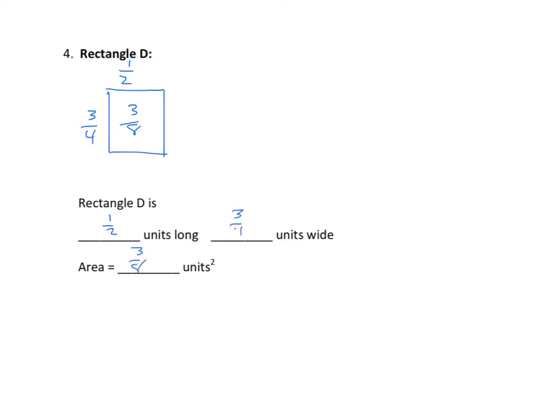Again, we could have used that old rectangular model. We did some shading. And then partition it this way. And then double shade. Again, we see that we had 8 partitions. 3 are double shaded. Same answer. Just a little different way of looking at it.